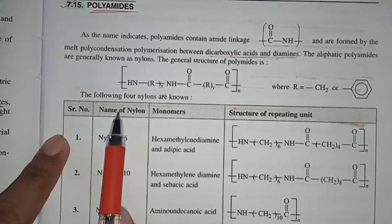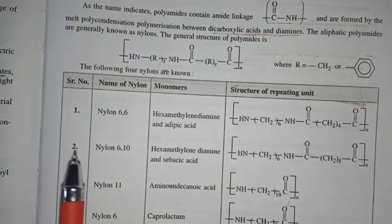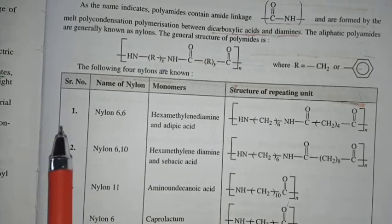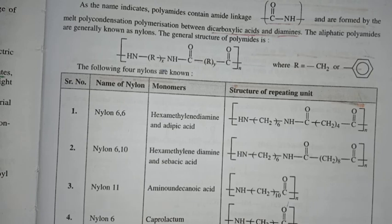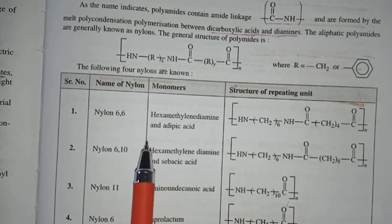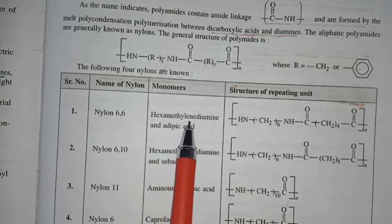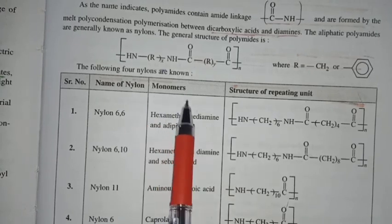The following four nylons are known. We will have an example of polyamides: nylon 6,6, nylon 6,10, nylon 11, nylon 6. So we will talk about nomenclature for each one.